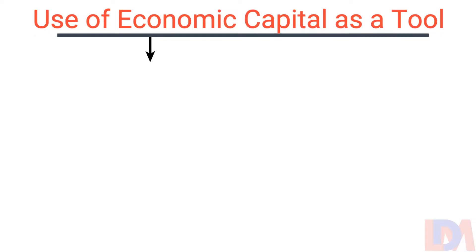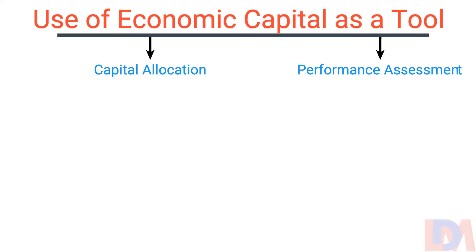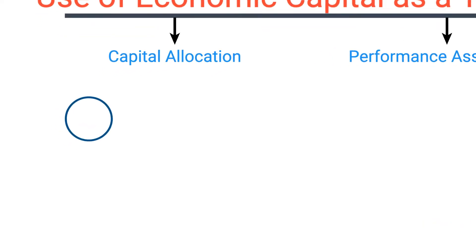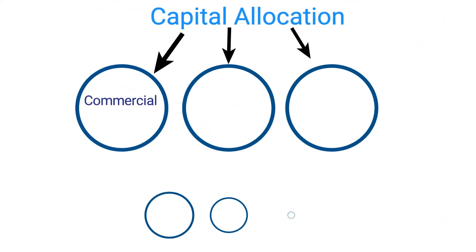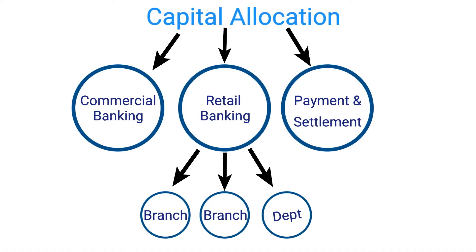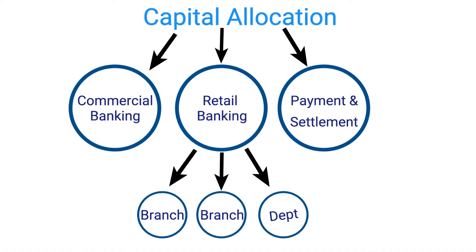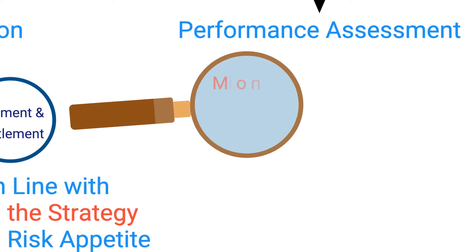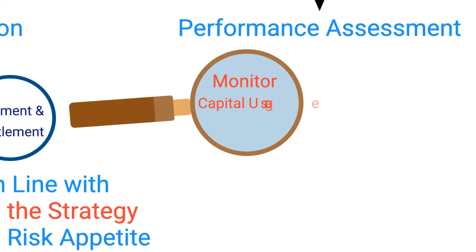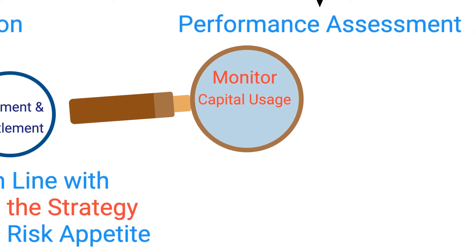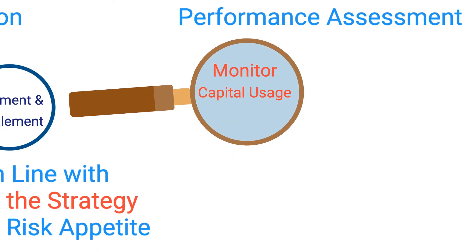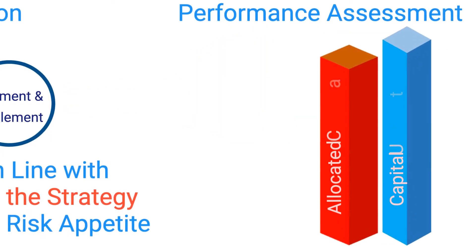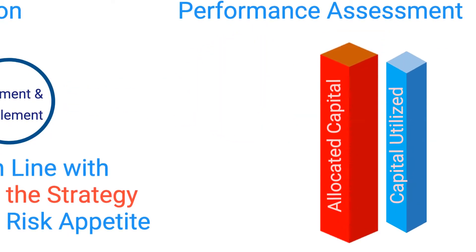Banks use the economic capital model as a tool primarily for two purposes: capital allocation and performance assessment. Within a bank, each business line is allocated economic capital to produce optimum return, in line with the strategy and risk appetite of the bank. Capital usage is regularly monitored, and mitigating measures are taken if capital usage exceeds the limit. Capital usage metrics are set and performance of business lines are evaluated against such metrics.